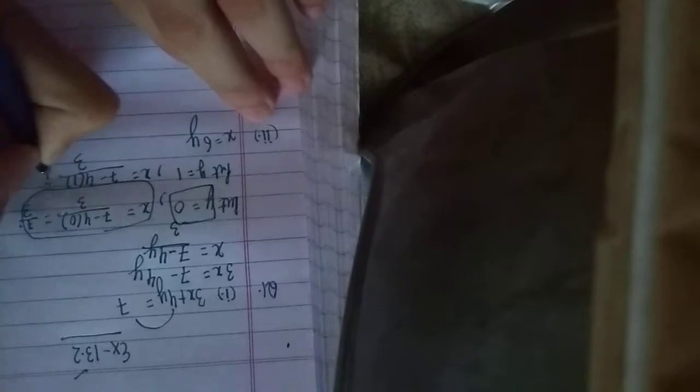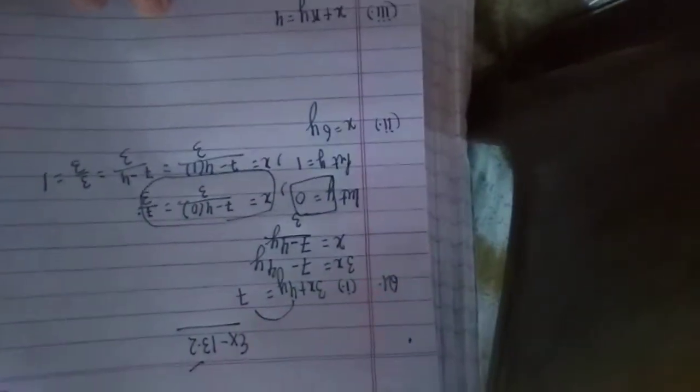So when y is 0, x is 7 by 3. Then if we find y equals 1, then x will be 7 minus 4 into 1 by 3, which is 7 minus 4 by 3. 7 minus 4 is 3, 3 by 3 is 1. So the value is 1. So if y is 1, it means x is 1. So these are our two solutions for the equation.